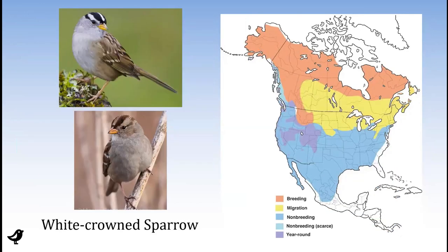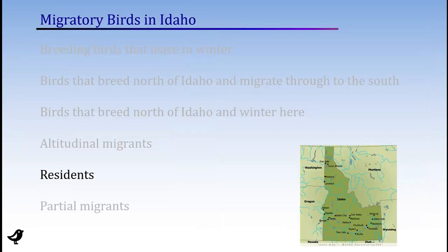White-crowned sparrows are another favorite of backpackers. Once you get to higher elevations and treeline, you'll find white-crowned sparrows breeding, also all across the northern Arctic across the tundra. Once more, they're resident in Idaho only in the sense that they're at high elevations in the summer and lower elevations during the winter. So that's a sample of some of those altitudinal migrants.